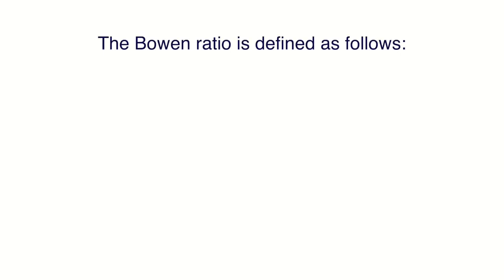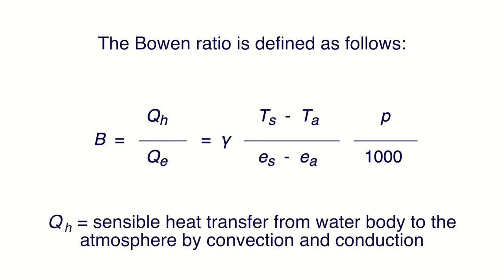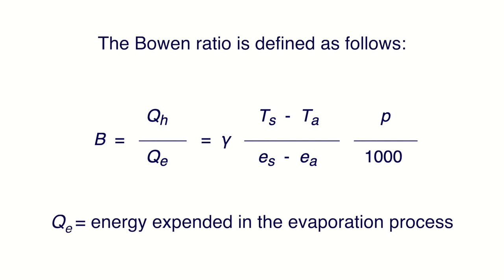The Bowen Ratio is defined as follows, in which B equals the Bowen Ratio; Q sub H is the sensible heat transfer from the water body to the atmosphere by convection and conduction; and Q sub E is the energy expended in the evaporation process.